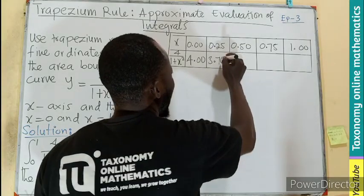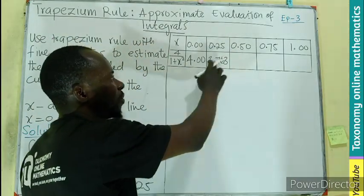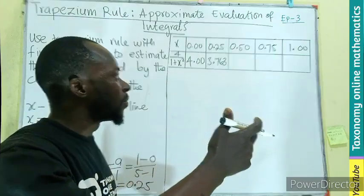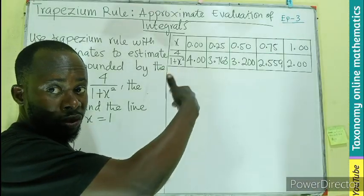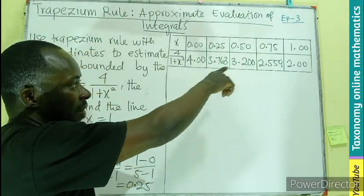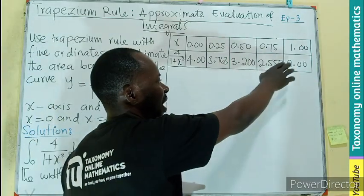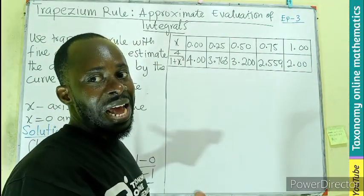Then we continue for all the x values. If you put in the values, you will arrive at the same y values that we have, just replacing x with each x value.